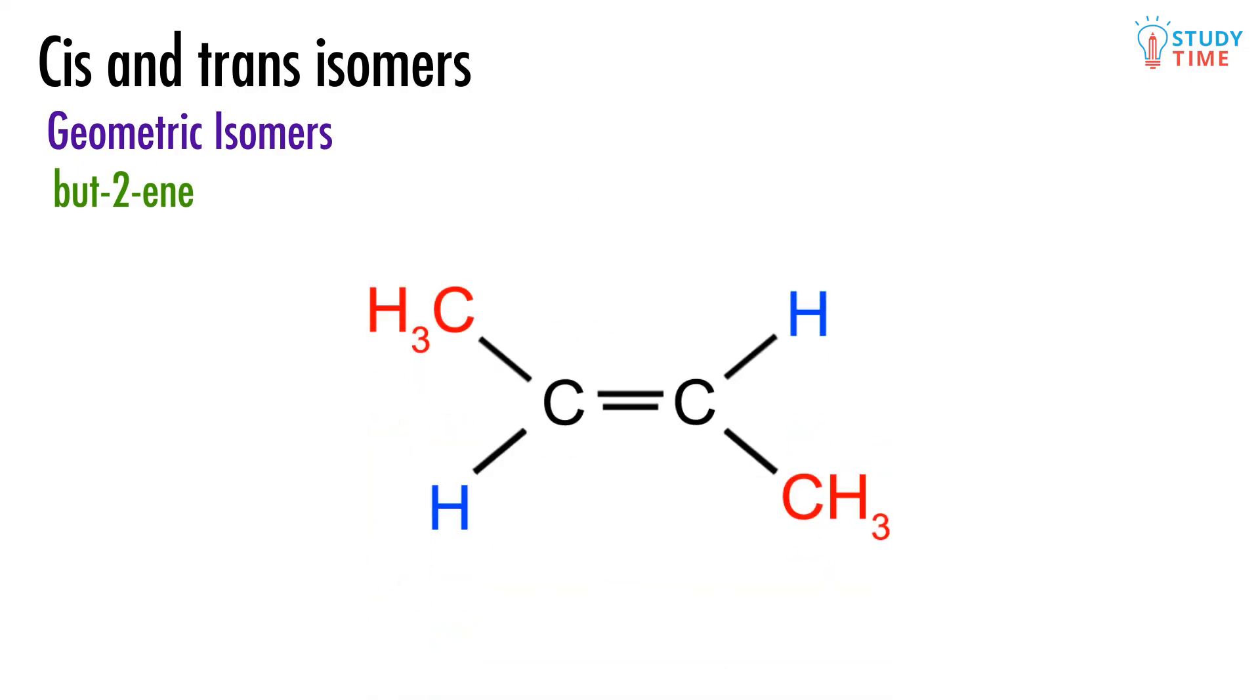You can probably see what we're going to do next, which is to show you the opposite of the cis isomer. Now that one CH3 is on the opposite side of the other CH3, and one H is on the opposite side to the other H, we've got a different geometric isomer, which is called the trans isomer.